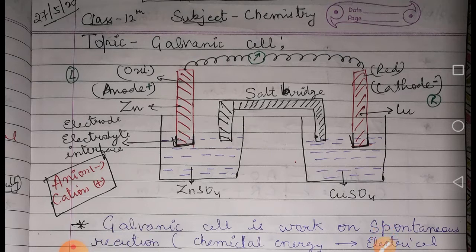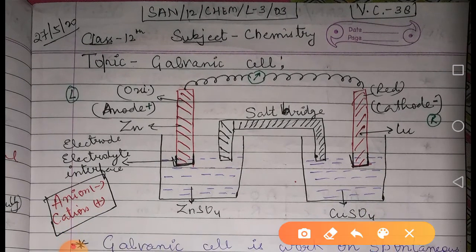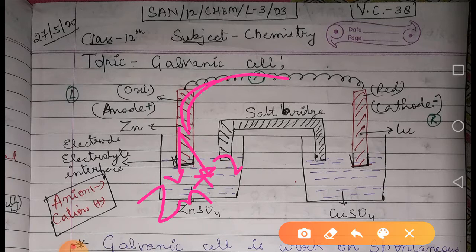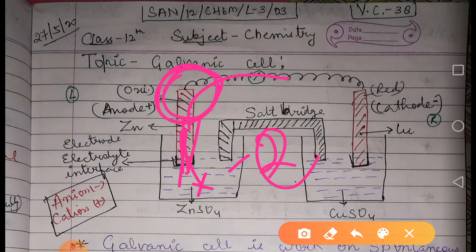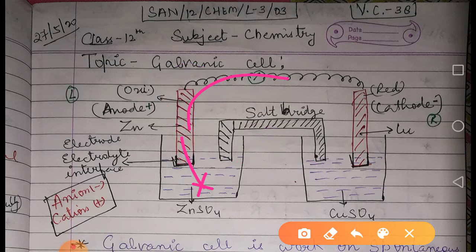At the zinc anode, zinc is transferring its electrons and forming Zn²⁺, which goes back into the solution. What remains on the anode are only the electrons — so we get only electrons at the anode and cations at the cathode.